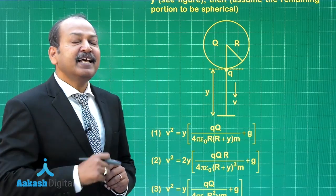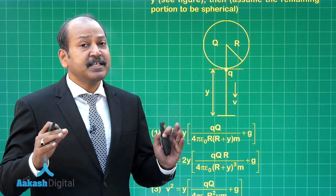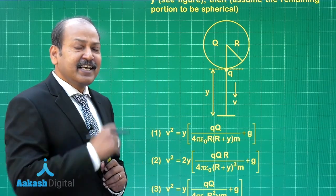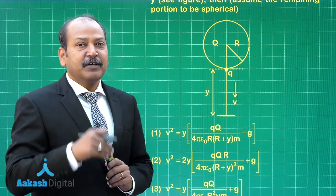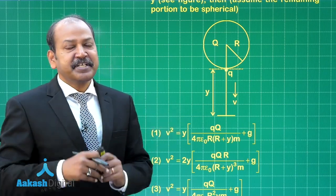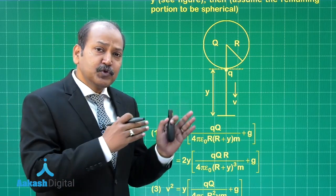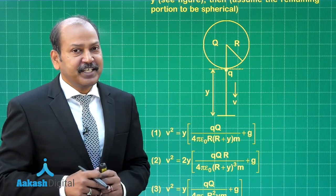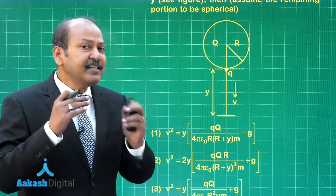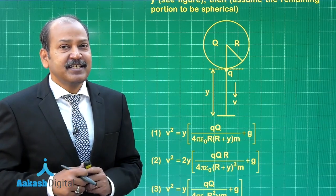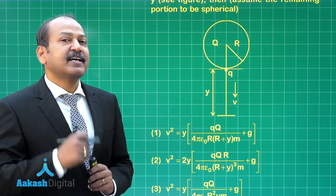That means the mechanical energy of the particle is being conserved. In this case, as it falls down, there is decrease in the gravitational potential energy and also decrease in the electrostatic potential energy, and this decrease in the two potential energies is equal to the gain in the kinetic energy.